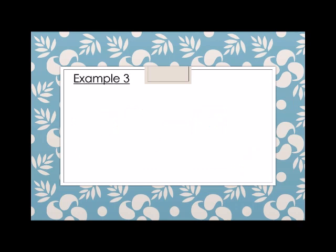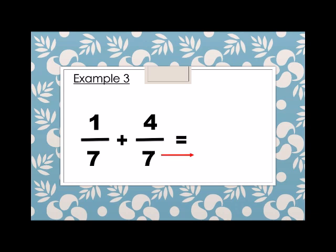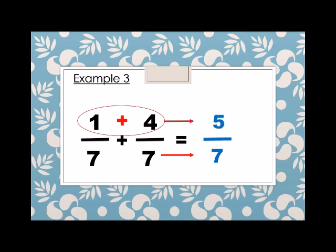Another example. We have 1 over 7 plus 4 over 7. Again, same denominator. So the denominator of the answer is 7. And then the numerator, we just add. 1 plus 4 is equals to 5. So 1 over 7 plus 4 over 7 is equals to 5 over 7.